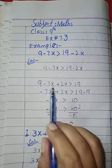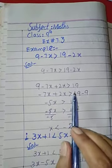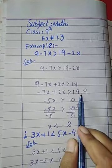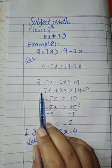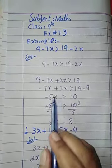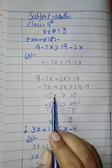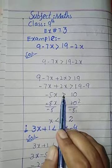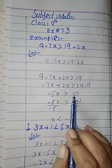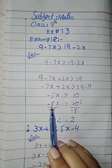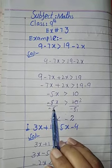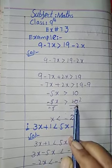When 9 comes to this side of the inequality the sign changes to minus, so we write minus 9. Now minus 7x plus 2x equals minus 5x, greater than 19 minus 9 which equals 10. Now to get the value of x we divide by minus 5 on both sides.